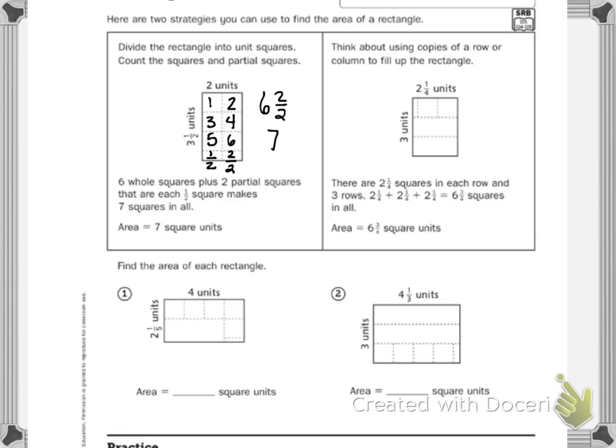Which is what it says. Six whole squares plus two partial squares that are each one half squares make seven squares in all. So the area is seven square units.